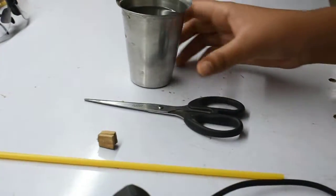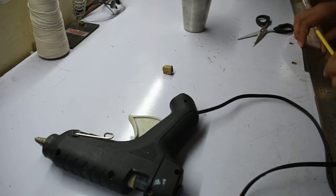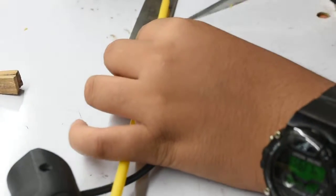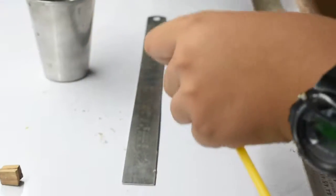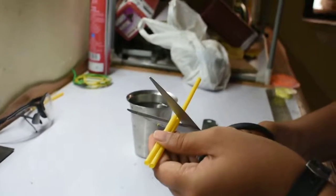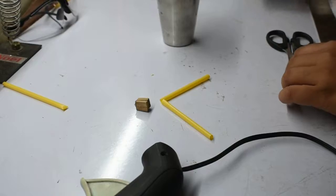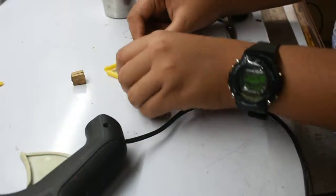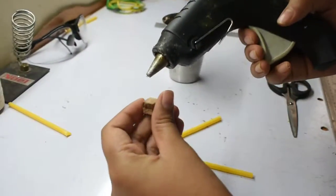First, cut the straw to a measurement of 3 to 4 inches. Cut another piece of the same size. Now we'll have two pieces of straws which are 3 inches. The sizes can even be made different.